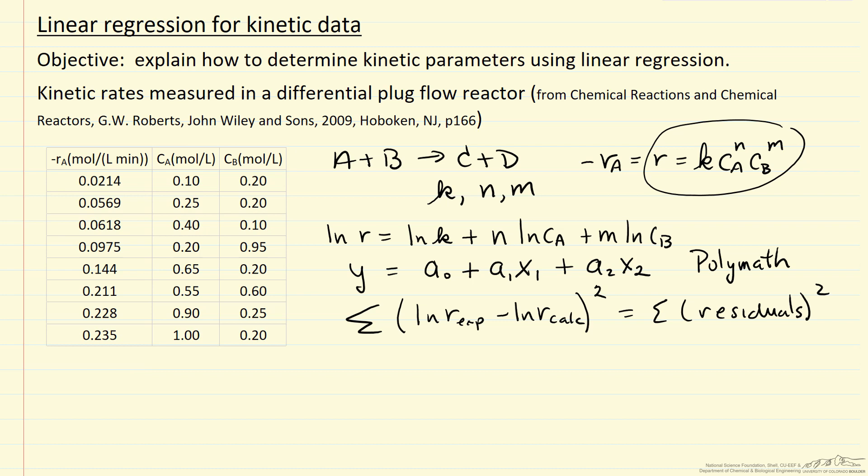So if we use polymath to minimize this summation, we're going to get parameters out for the values along the confidence limits, so let's look at the results.